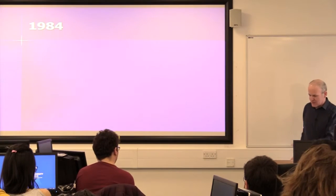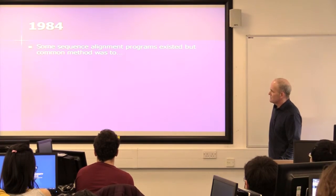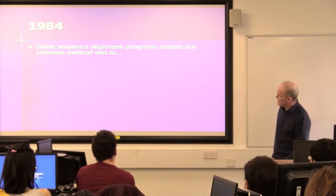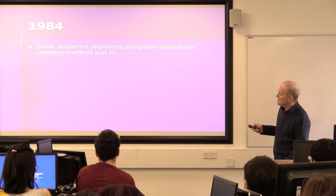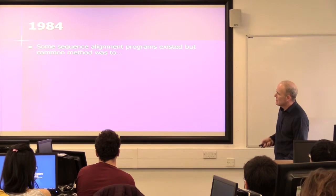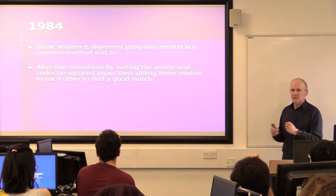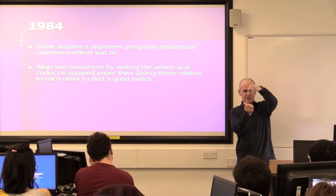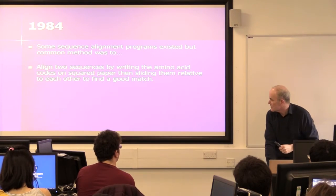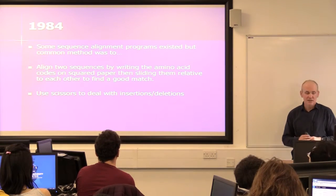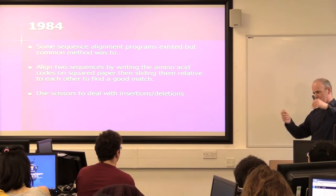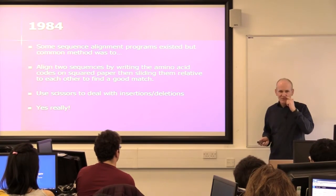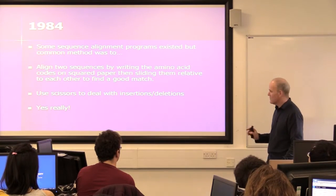So in 1984 — that's the year I started my PhD — there were programs around and we had more sequences. At that time there were about 2,500 protein sequences known. The way people aligned sequences, there was some software around but it wasn't very good or easy to use. The most common thing people did was they wrote the amino acid sequence on squared paper and slid them along relative to each other trying to line them up by eye. If you had to put in an insertion or deletion, you used scissors. People really did do that. I never did that because I'm lazy — I wrote programs to do it.